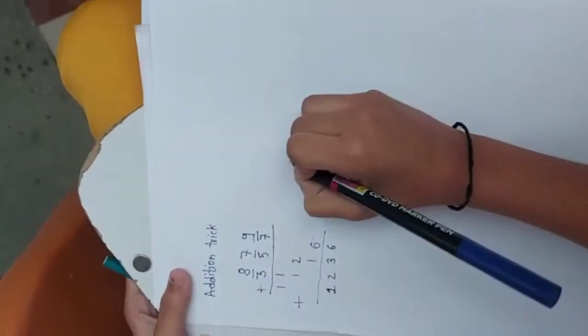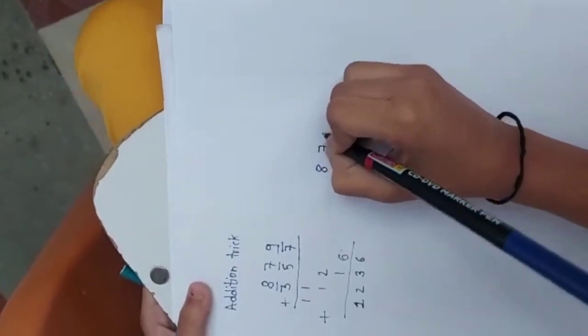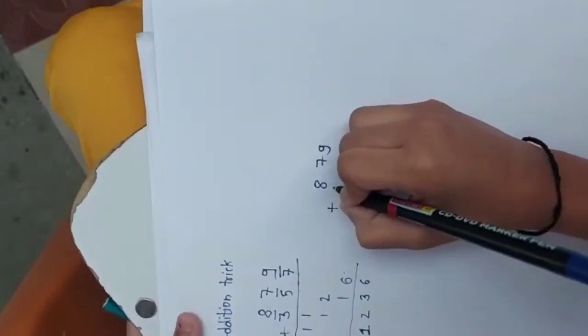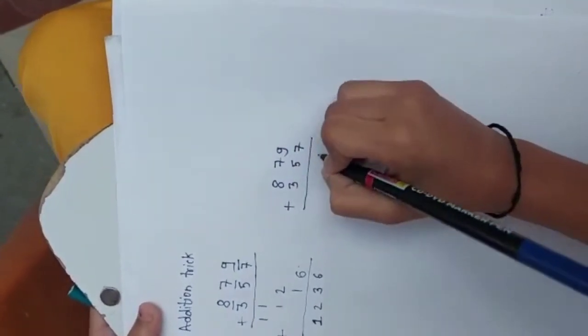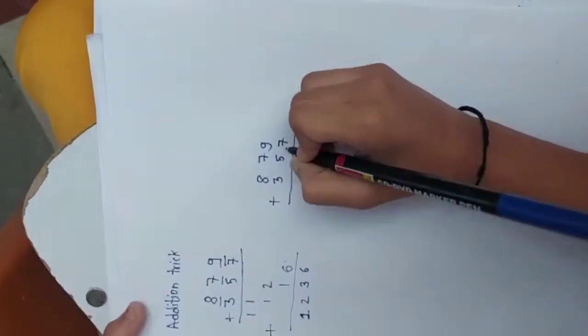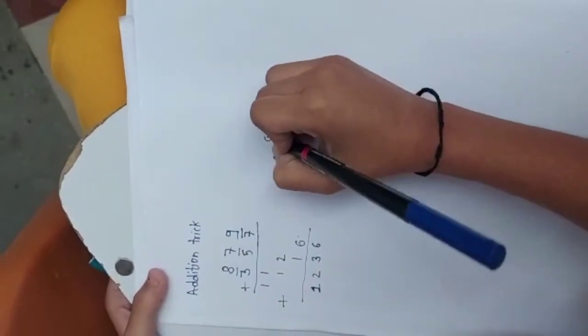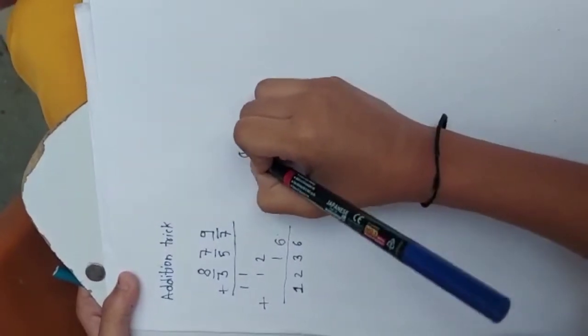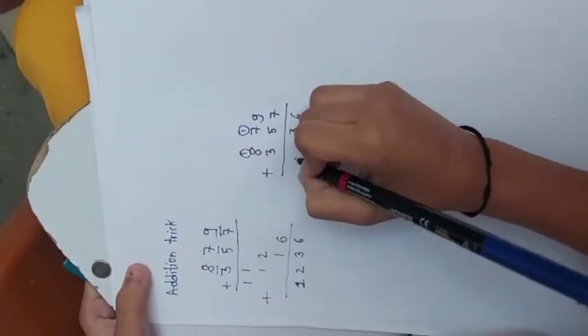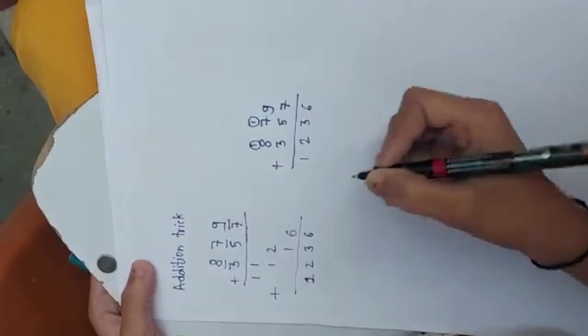Now, we will do by our regular method. 8, 7, 9, plus 3, 2, 7, 9, plus 7, is equal to 6. 7, 7, plus 5, is equal to 12, 13. 8, plus 3, is equal to 11, 12. Our answer is same.